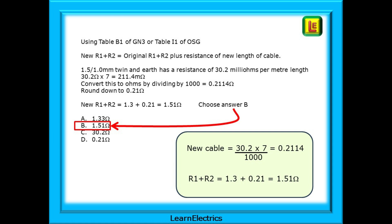The new R1 plus R2 will be equal to the original R1 plus R2, plus the resistance of the new length of cable. If 1.5 by 1 twin and earth has a resistance of 30.2 milliohms per meter length, then 30.2 ohms multiplied by 7 is 211.4 milliohms. We can convert this to ohms by dividing by 1000 to give 0.2114 ohms, and then round down to 0.21 ohms.